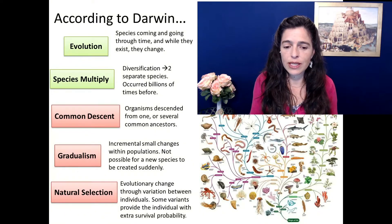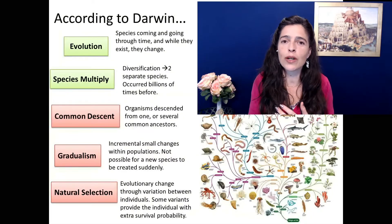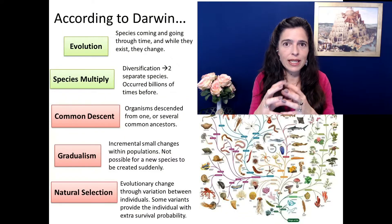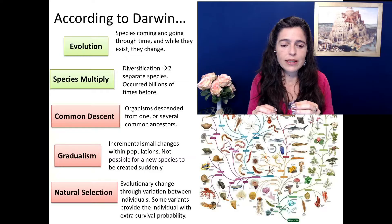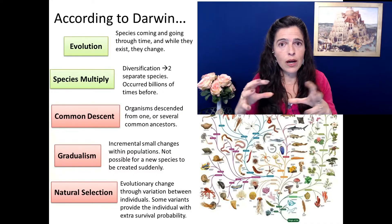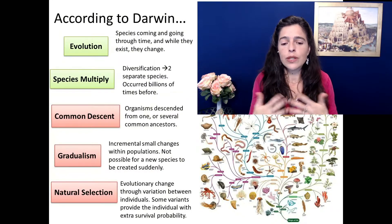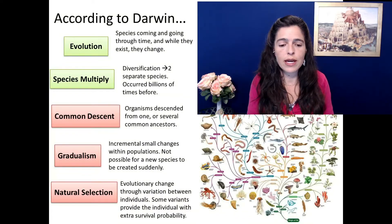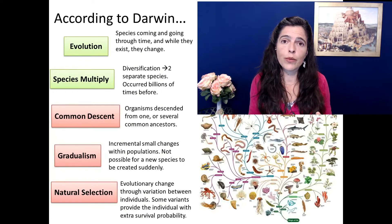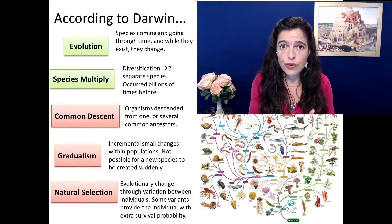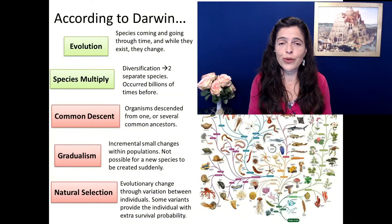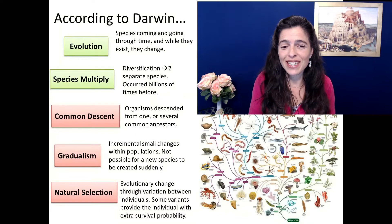And finally, natural selection is this invisible force. Some people call it a blind watchmaker, because when you see a watch you notice it's complex and has a purpose and a mechanism, yet somehow a blind watchmaker decides what each part is going to do and how to put them all together. Natural selection selects the members of a species that are most apt to survive and reproduce. That's basically Darwin's theory of evolution, and I hope to show you that it's not only not possible, but actually a fairy tale.